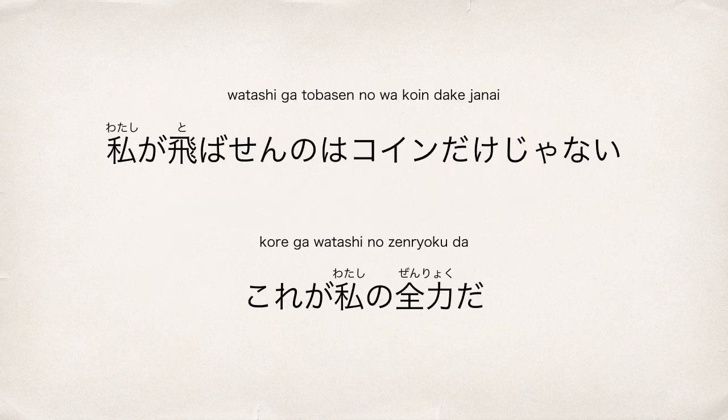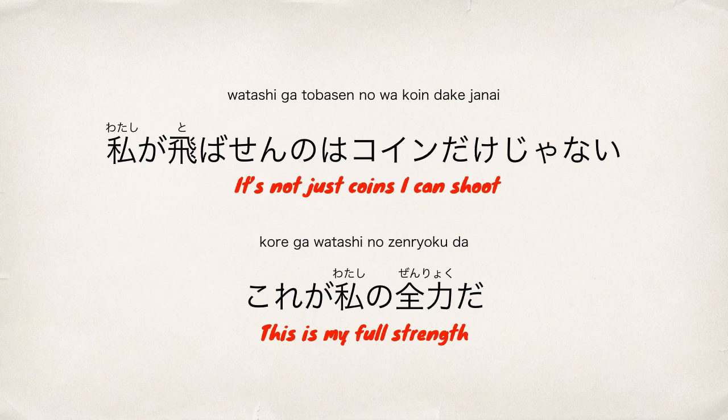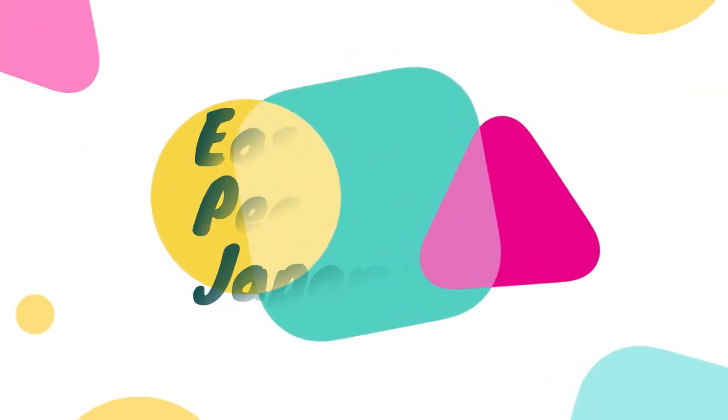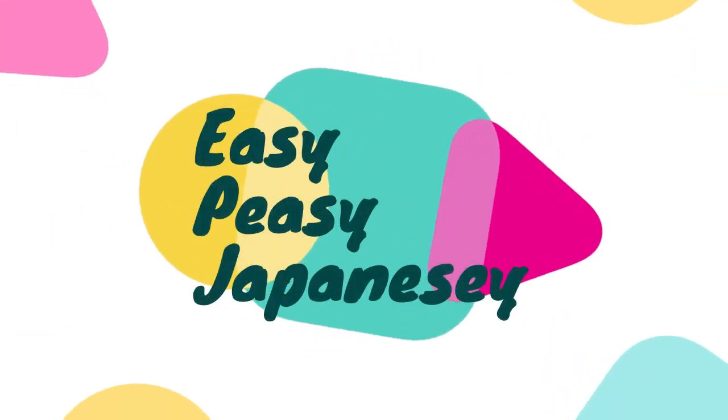So today's quote — 私が飛ばせんのはコインだけじゃない。これが私の全力だ — means: 'It's not just coins I can shoot. This is my full strength.' That's all for today. Thanks for watching.